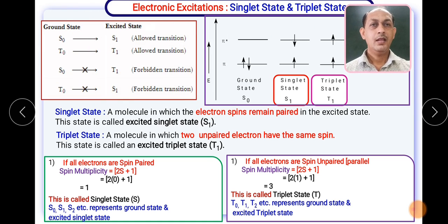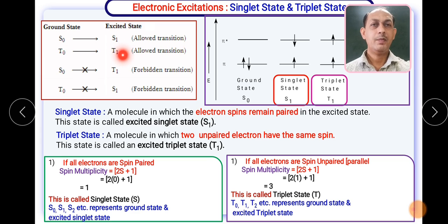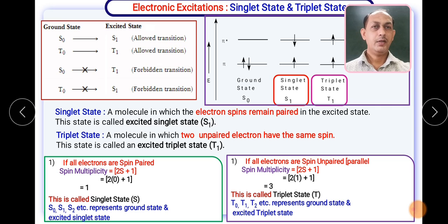We have also seen allowed and forbidden transitions. Allowed transitions are those taking place within the same electronic state — for example, S0 to S1 (singlet ground to singlet excited) or T0 to T1 (triplet ground to triplet excited). Forbidden transitions are those between different spin states — that is, singlet to triplet or triplet to singlet — and these are called forbidden transitions.